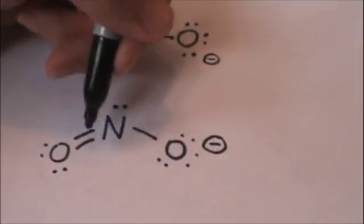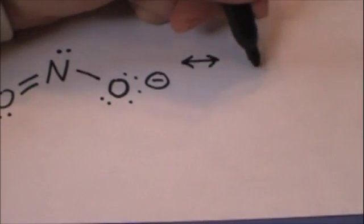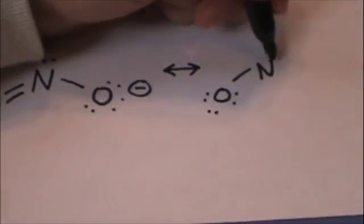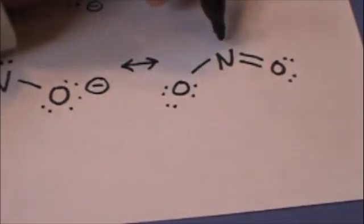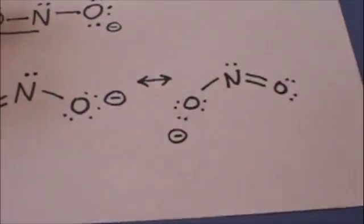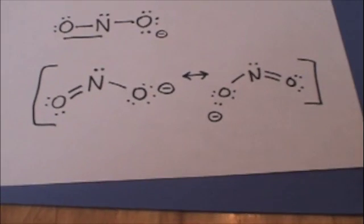You could have put the double bond here and the single bond there so we call those resonant structures. The resonant structure is denoted using arrows and brackets.